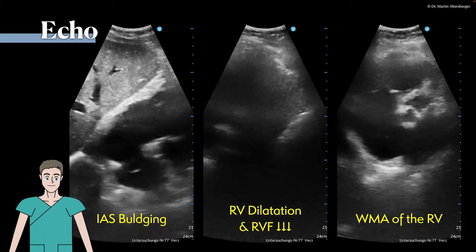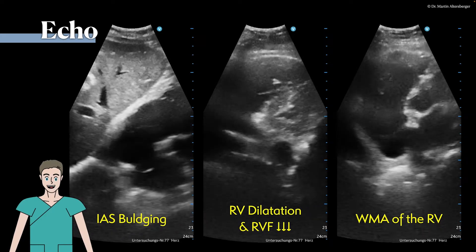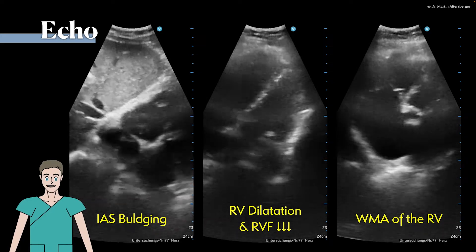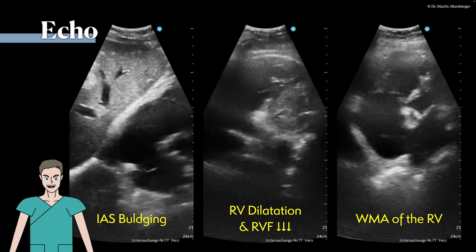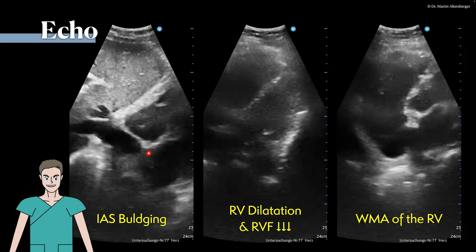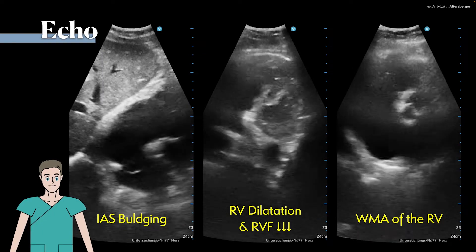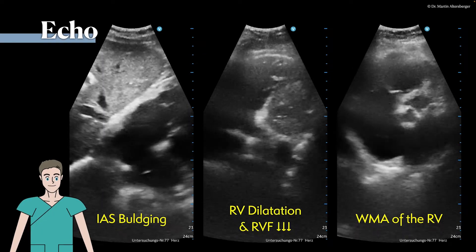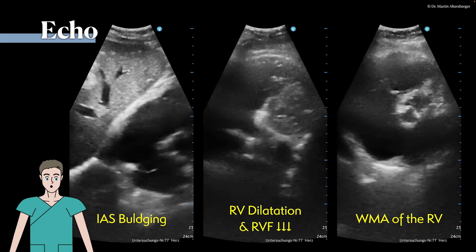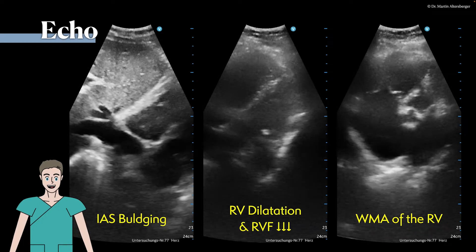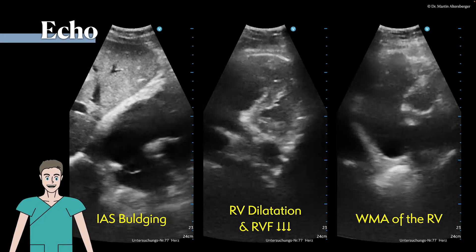We have right ventricular dilatation and a reduction in right ventricular function, and the interatrial septal bulging from right to left tells us that right ventricular pressures or volume are mainly the problem in this case.